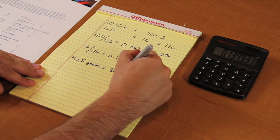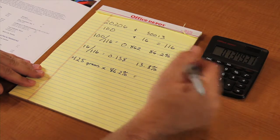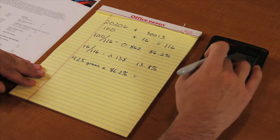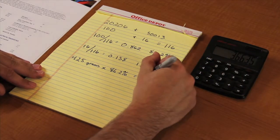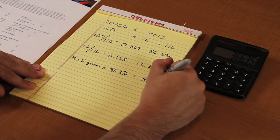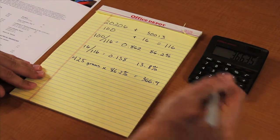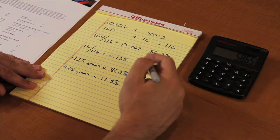For the purpose of this video, we will be using the amount 425 grams. 86.2% of 425 grams gives us 366.4 grams of 20206. 13.8% of 425 grams gives us 58.6 grams of 50013.